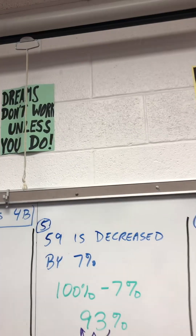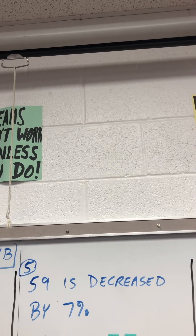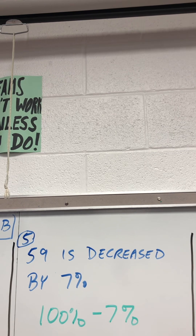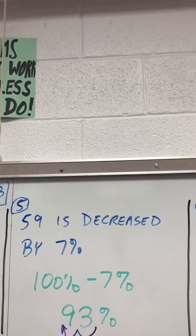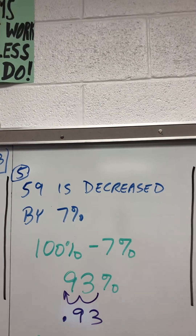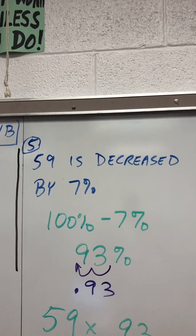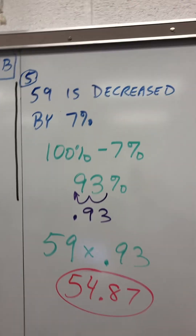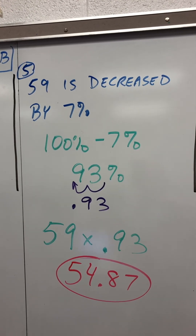59 is decreased by 7%. Do 100% minus 7%. That's 93%. Move the decimal two places, 0.93. What's 59 times 0.93? 54.87.